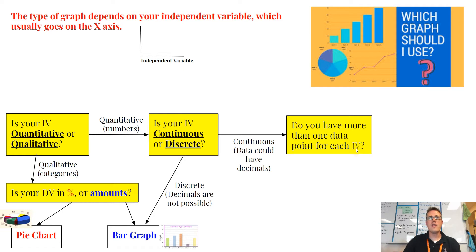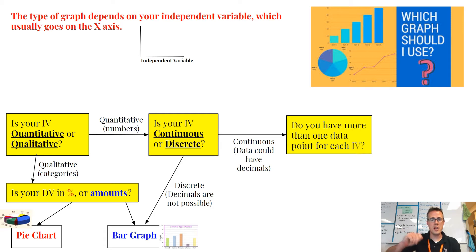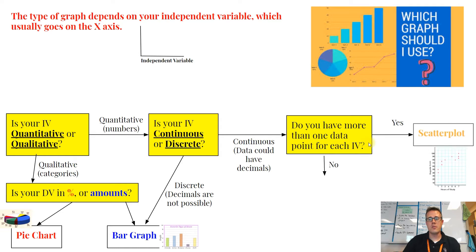What that means is: let's say you were measuring plants with different amounts of water, and you're going to see how much they grew as your dependent variable. How much water they get is your independent variable — that's something that could be measured in decimals. And if you were doing trials with different amounts of water, you're going to have more than one measurement for each amount of water. If you could have continuous data with multiple points per IV, you're going to have a scatter plot, because you can have multiple dots along the same spot on your graph.